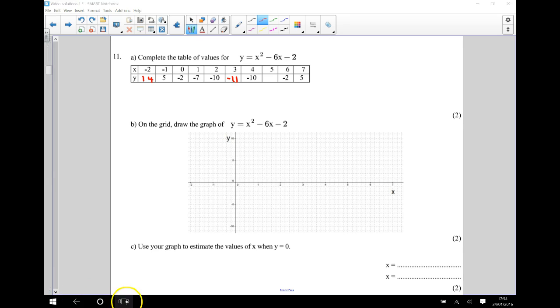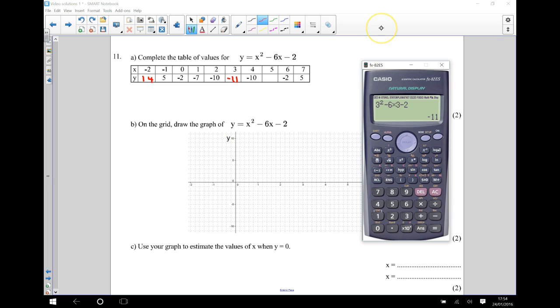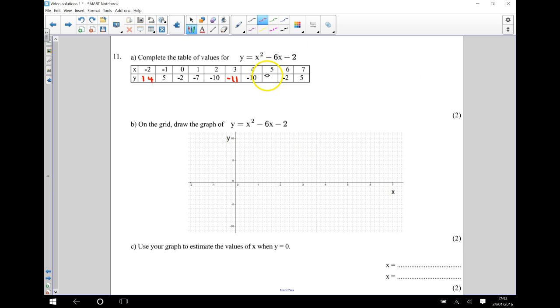And then I've got 5 over here. So that's going to be 5 squared, take away 6 times 5, take away 2. And that gives me negative 7. So that's the table done.